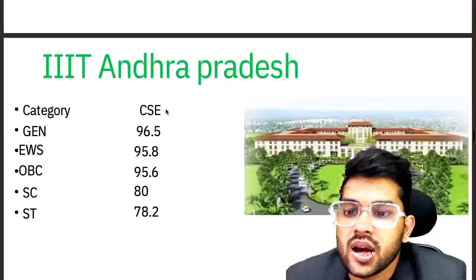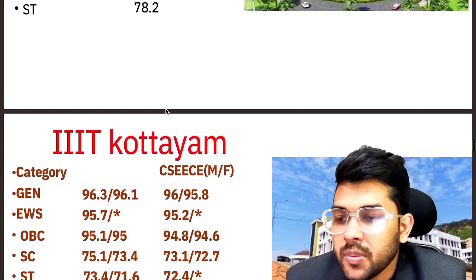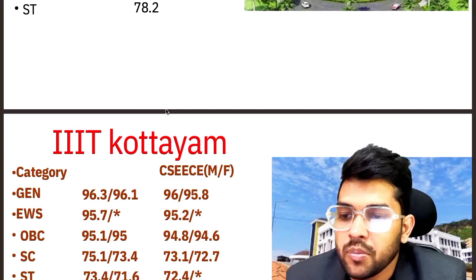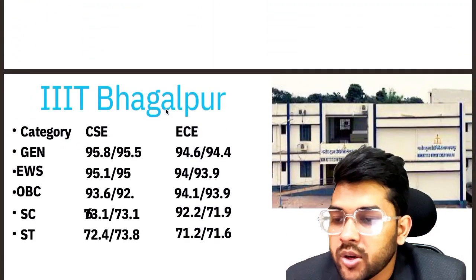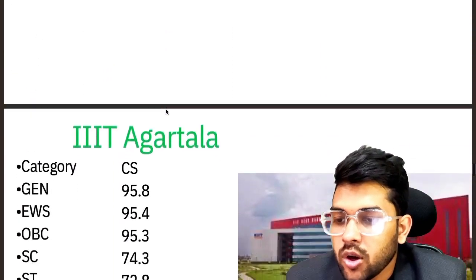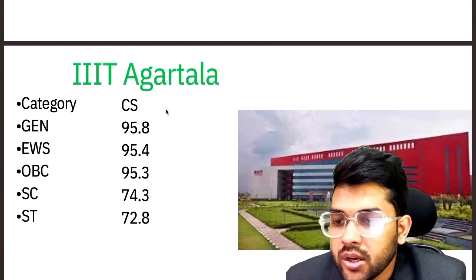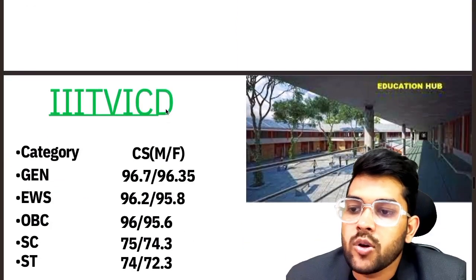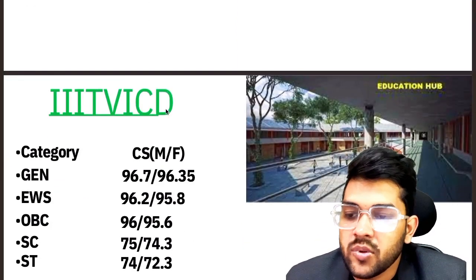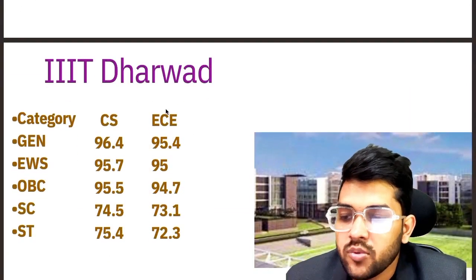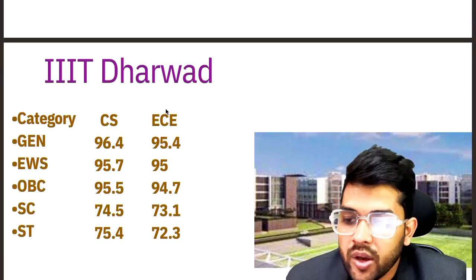For IIIT Kottayam — CSE male: 96.3, 95.7, 95.1, 75.1, 73.4. For IIIT Bhagalpur: 95.8, 95.1, 93.6, 93.1, 72.4. For IIIT Agartala: 95.8, 95.4, 95.3, 74.3, 72.8. For IIIT Vizag: 96.7, 96.2, 96.2, 75, 74. For IIIT Dharwad: 96.4, 95.7, 95.5, 74.5, 75.4.